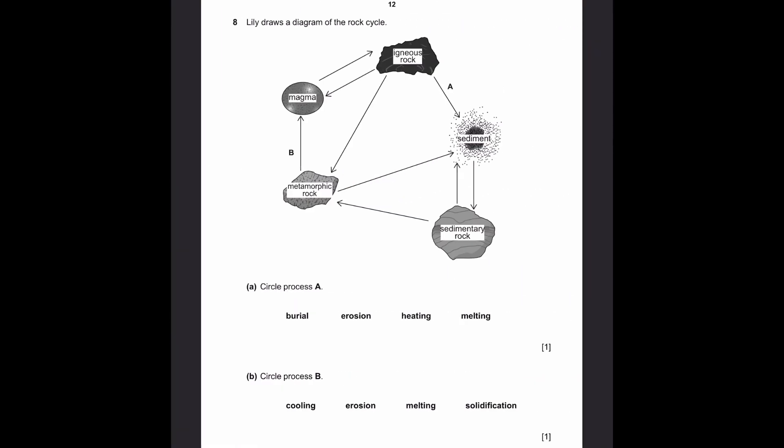Let's go to question 8. Lily draws a diagram of the rock cycle. Part A. Circle process A. Process A is changing the igneous rock to sediments. And we can see that these sediments are tiny particles of rock. Therefore, this is called erosion. Because rocks corrode and erode to make these tiny particles, which are made of the same rock.